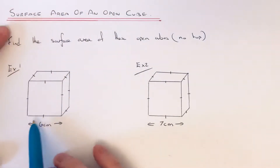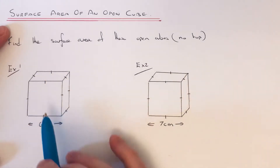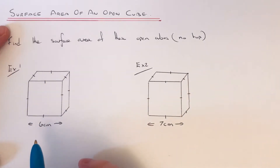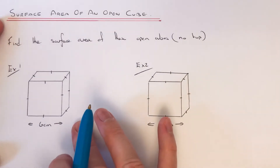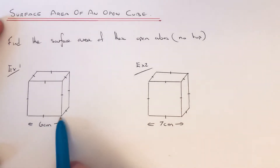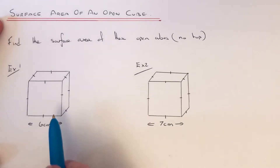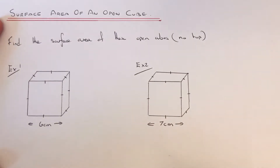Our first example: we have a cube of side length 6cm, so all the edges are 6cm long. We need to work out the surface area. To find the surface area you need to work out the area of all the faces on the cube. A normal cube would have 6 square faces. However, we haven't got the top face on this box, so we've only got 5 faces to work out.